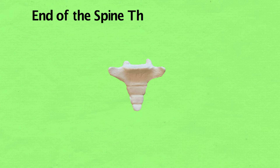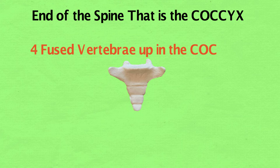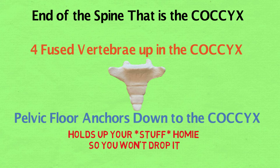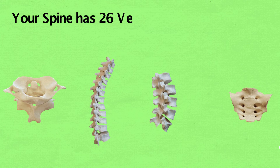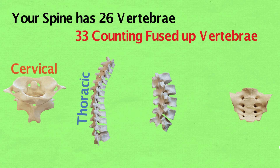End of the spine — that is the coccyx. Four fused vertebrae up in the coccyx. Pelvic floor anchors down to the coccyx — holds up your stuff so you won't drop it.